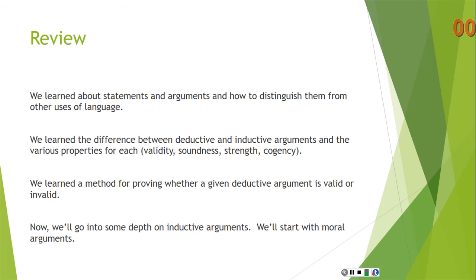In the introduction to reasoning, we learned about statements and arguments and how to distinguish them from other uses of language, and we learned the difference between deductive and inductive arguments, and the various properties for each, such as validity, soundness, strength, and cogency. In our section on propositional logic, we learned a method for proving whether a given deductive argument is valid or invalid — that was the truth table method. Now we'll go into some depth on inductive arguments, and we'll start with moral arguments.